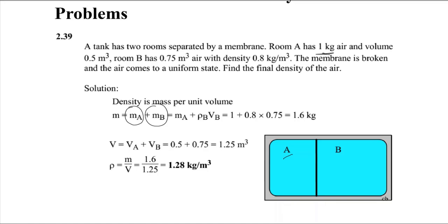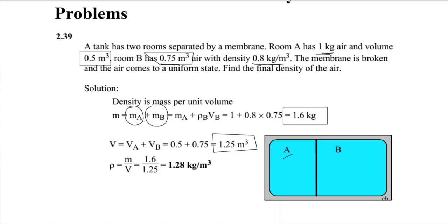The mass of Room B is not directly given, but we have the volume and density. Volume multiplied by density gives the mass of B, so the total mass is 1.6 kg. The final volume is 0.5 plus 0.75 cubic meters, which is 1.25 cubic meters. Density equals mass per unit volume: 1.6 divided by 1.25 gives a final density of 1.28 kg per cubic meter.